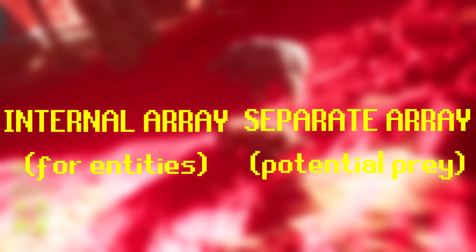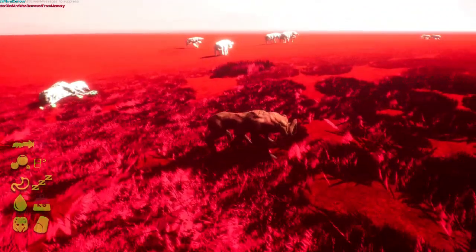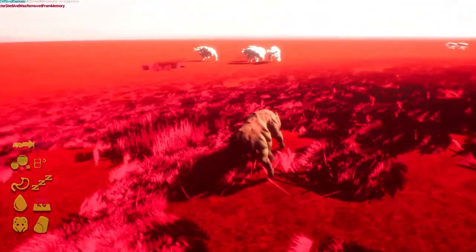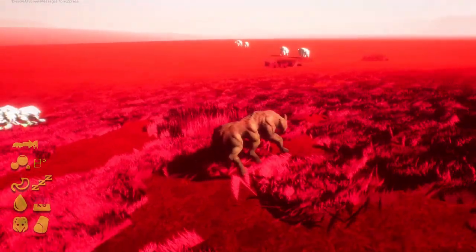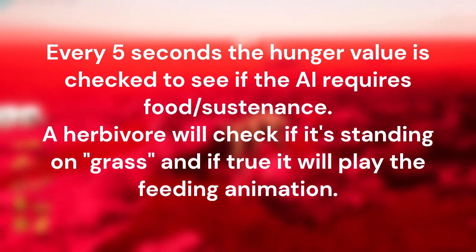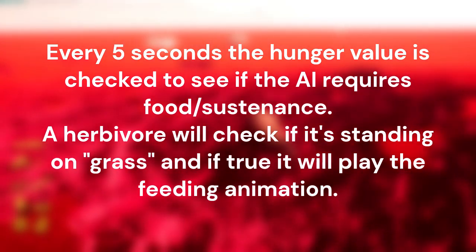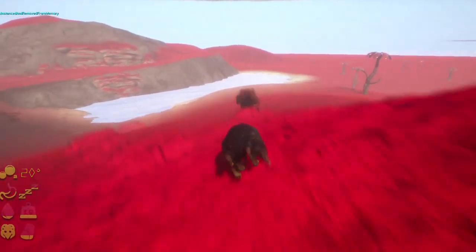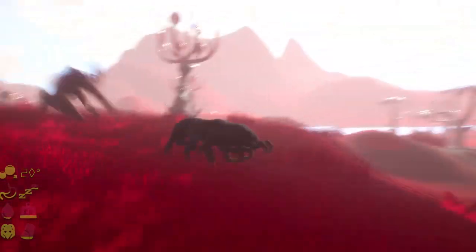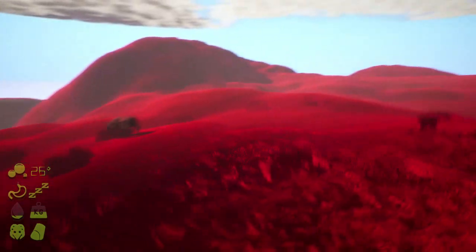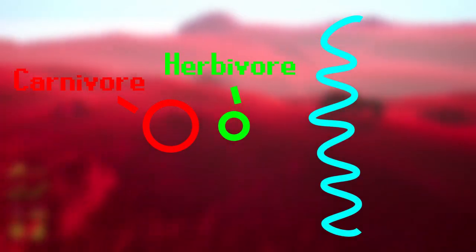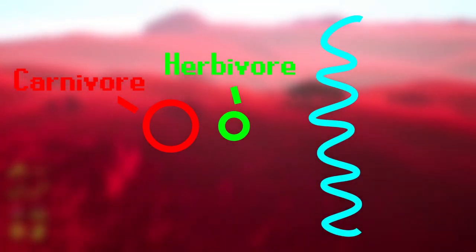All detected entities are stored on an individual basis in an array of detected entities, and a separate array also exists for potential prey. For most herbivores, they get pretty simple feeding functions: every five seconds, the hunger value is checked; a herbivore will check if standing on grass, and if true, play the feeding animation. For carnivores, when hungry, they'll check an array of detected prey to find the closest prey available, then initiate attack functions alongside the run function. Escaping AI responds by finding a random location at a certain distance from a threat in the opposite direction. A fully terrestrial species will detect water as an obstacle and try to find a way around it; if no valid location is found, they will panic and resort to swimming away from the threat.